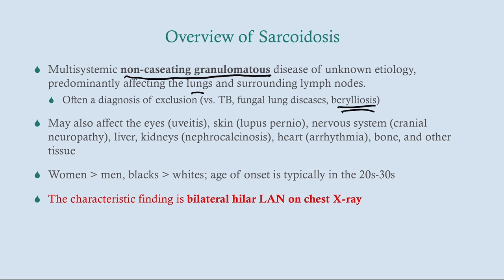Sarcoidosis can affect a variety of organs. In the eyes it causes uveitis. In the skin it causes lupus pernio and erythema nodosum. It affects the nervous system, causing Bell's palsy — a cranial nerve 7 palsy. It can affect the liver, kidneys via nephrocalcinosis, the heart where granulomatous inflammation causes conduction defects and arrhythmias, and bone, producing punched-out lesions similar to those seen in multiple myeloma.